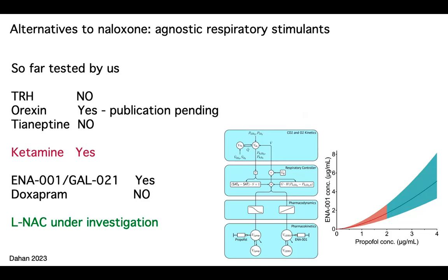We have performed a whole set of experiments on what we call agonistic respiratory stimulants — drugs that stimulate the ventilatory control system without interacting with the opioid receptor system. So they cause respiratory stimulation through other interactions, through other receptor systems. In animals, we can reverse opioid-induced respiratory depression, and in humans we investigated orexin. An orexin agonist can cause potent respiratory stimulation.